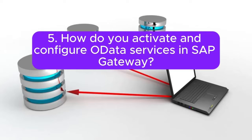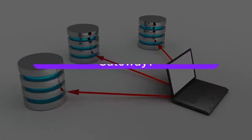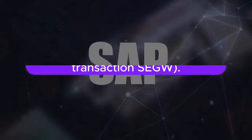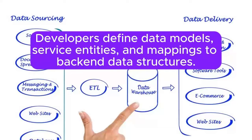Question 5: How do you activate and configure OData services in SAP Gateway? OData services are activated and configured using the SAP Gateway Service Builder transaction SEGW. Developers define data models, service entities, and mappings to back-end data structures.